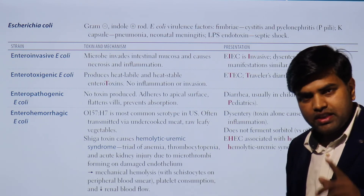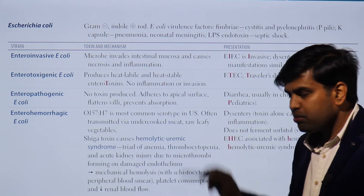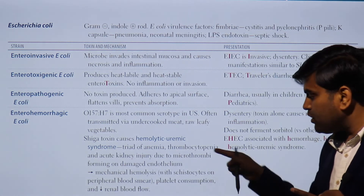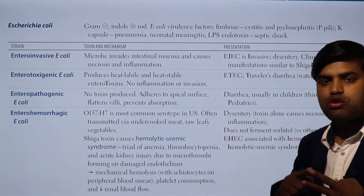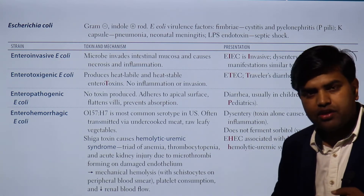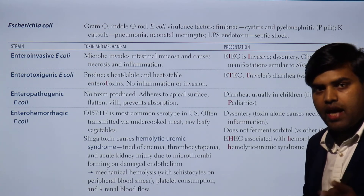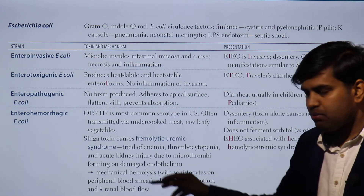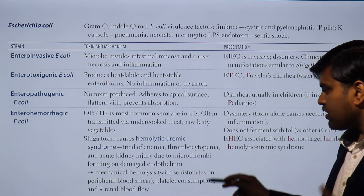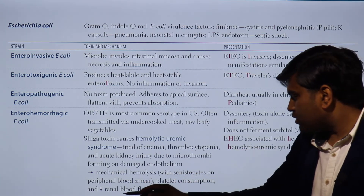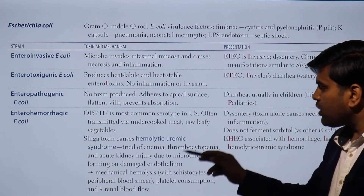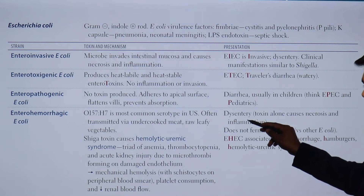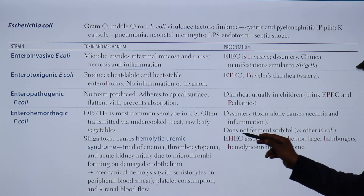Hemolytic uremic syndrome is diagnosed by: anemia due to hemolysis of RBCs by microthrombi, thrombocytopenia due to platelet consumption, and acute kidney injury due to reduced renal blood flow. Schistocytes are seen on peripheral blood smear — indicating mechanical hemolysis. HUS develops from Shiga-like toxin produced by EHEC, which itself causes hemorrhagic diarrhea.